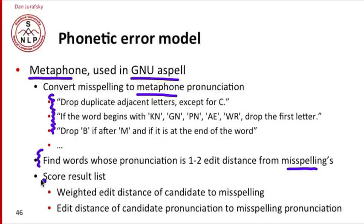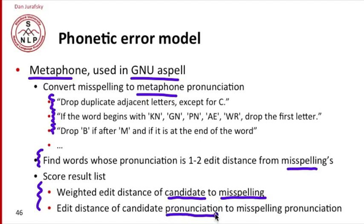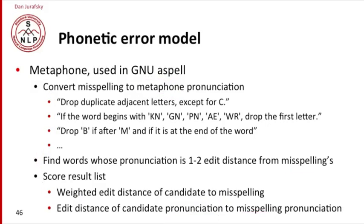We score the words by some combination of two edit distances: how likely is the candidate to be orthographically changed into the misspelling (a channel model), and how likely is the misspelling to be pronounced like the candidate. A Metaphone system doesn't use a language model but uses a pronunciation-based channel model. You can also imagine combining a pronunciation-based model with a noisy channel model.